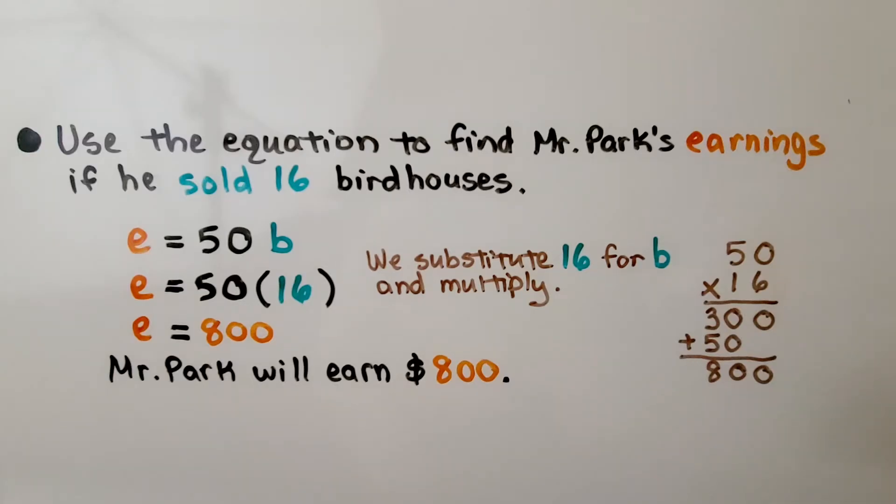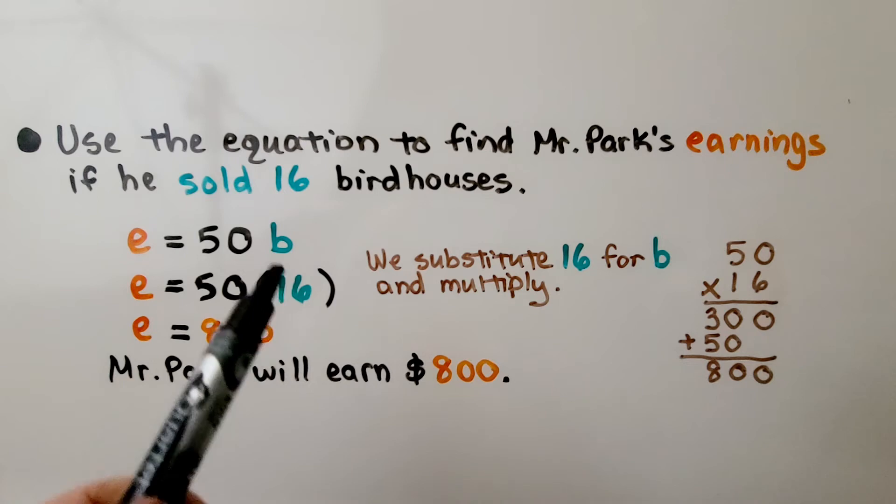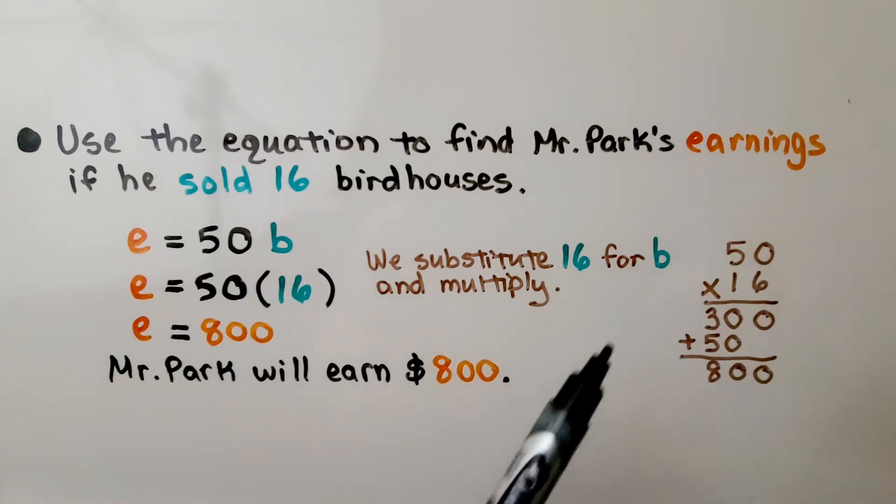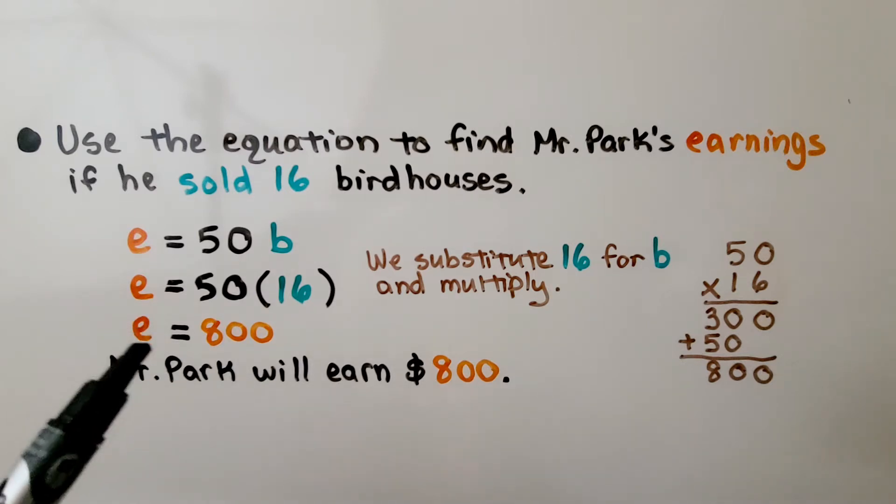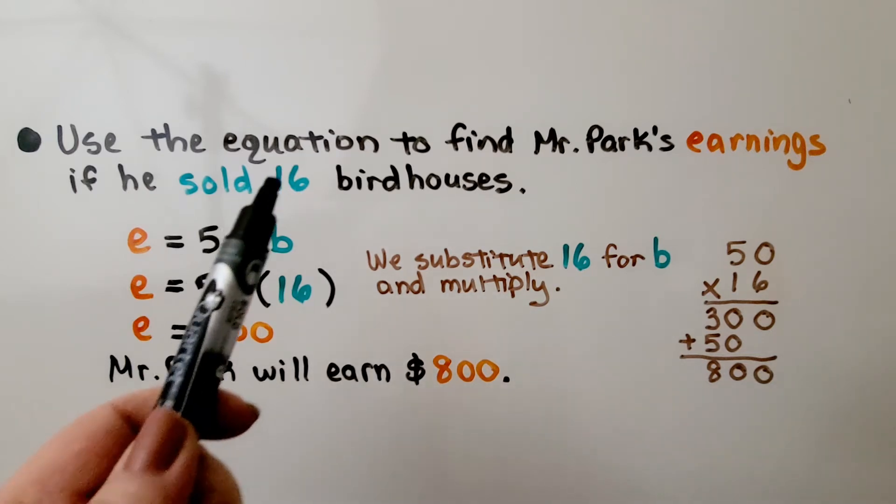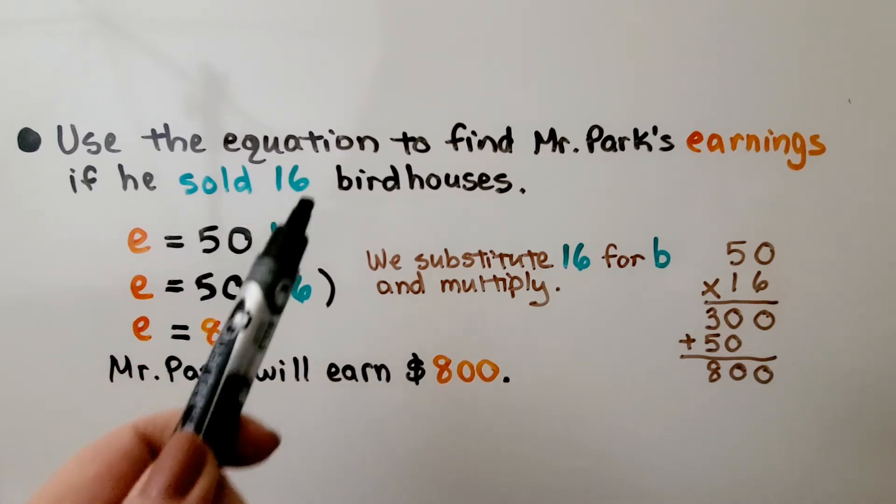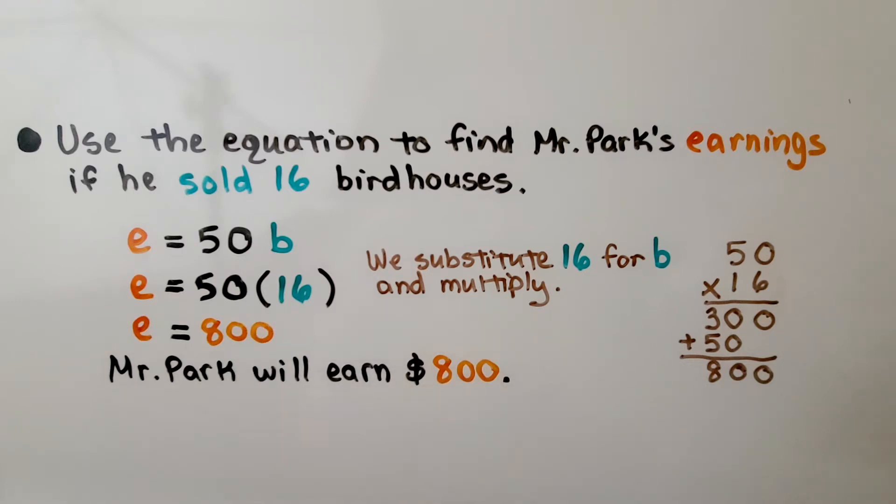We can use the equation to find Mr. Park's earnings if he sold 16 birdhouses. We substitute 16 for B and multiply 50 times 16 is 800. Mr. Park will earn $800. We can substitute any amount of birdhouses he sells for B to find how much he earns.